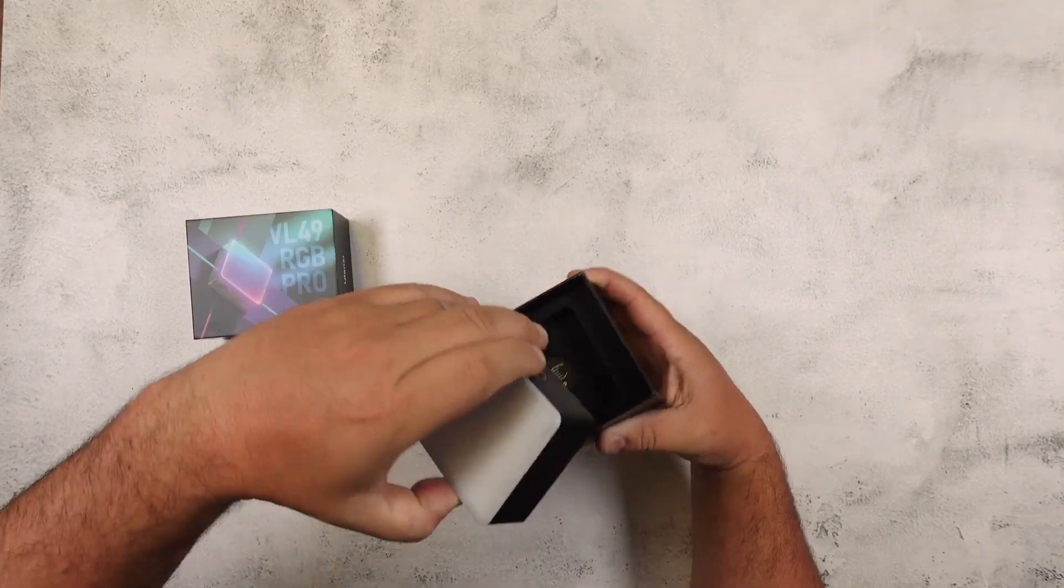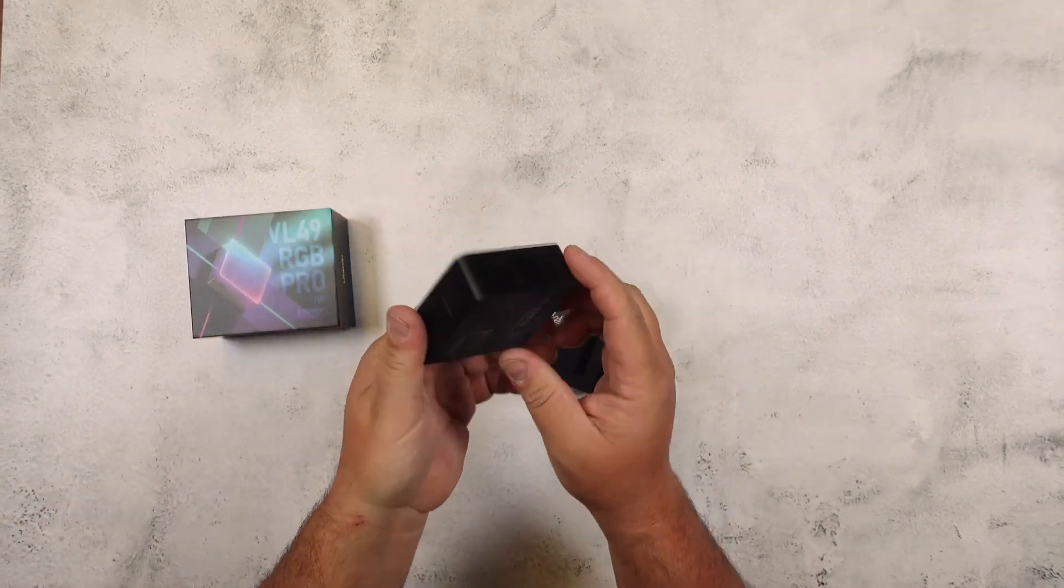So this is the Ulanzi VL49 RGB LED video light and it's nice and tiny but it carries a really bright light.